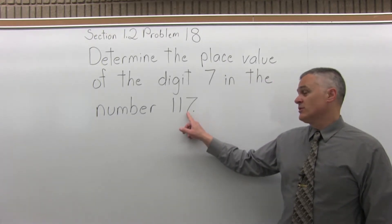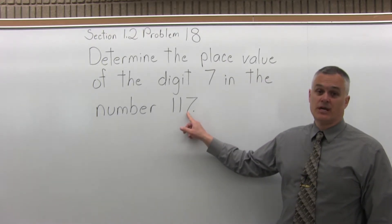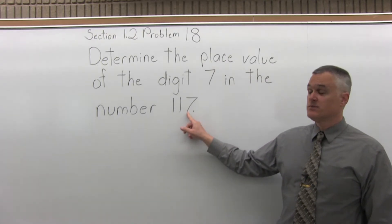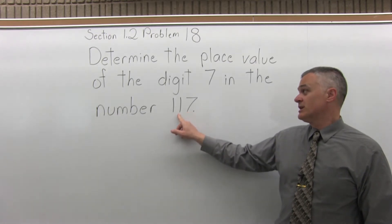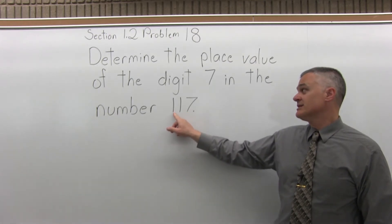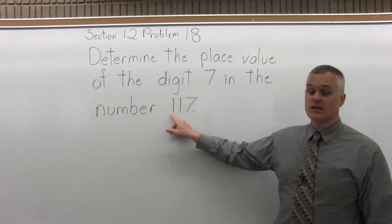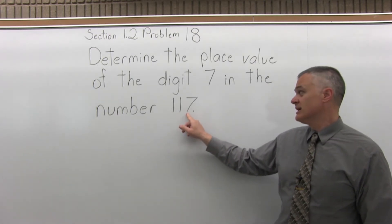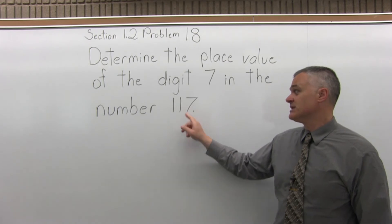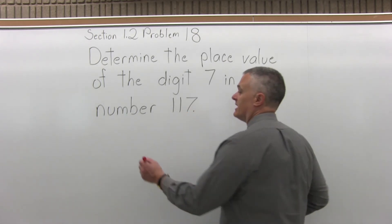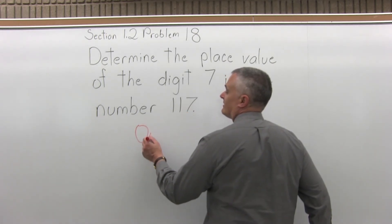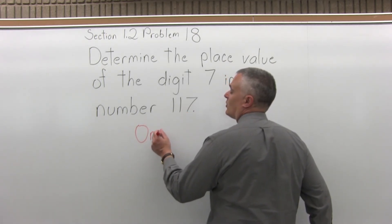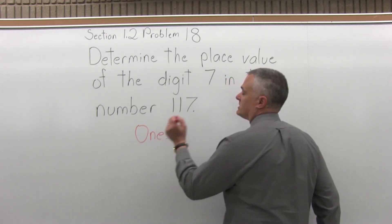We have a 7 in the rightmost position — that would be the ones position. The next one is in the tens, the one after that is in the hundreds, but we don't need that. It asks for the 7, and the name of the position that 7 is in is the ones position.